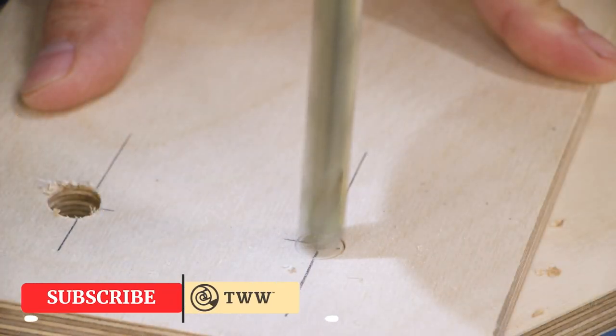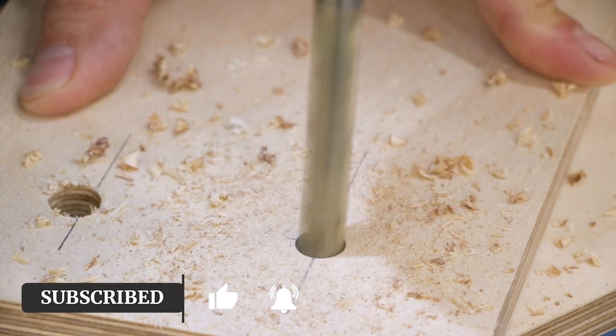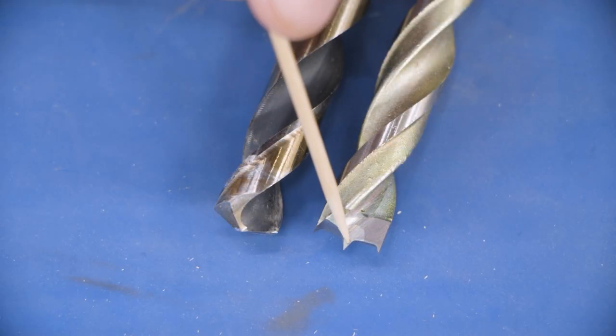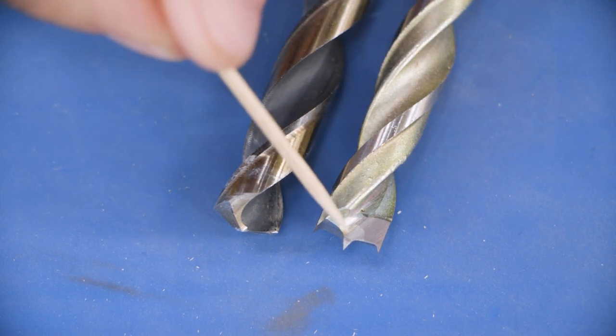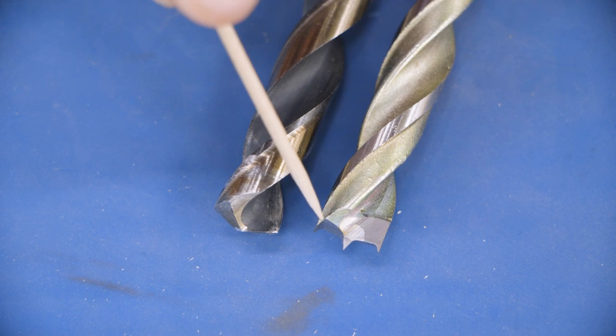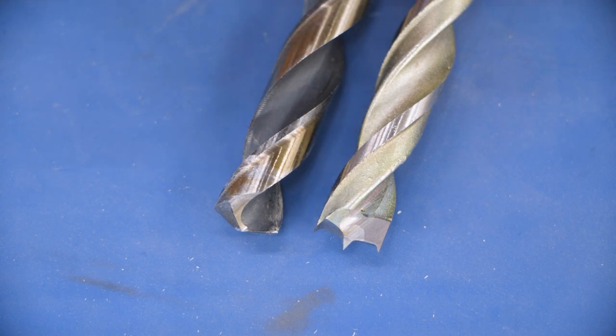That allows you to get pinpoint accuracy. So you can put a little tiny dot on something and make sure that this little spur goes into that dot, you're going to get a perfectly located hole. And this particular type of Brad Point bit actually has spurs on the outside as well, which increases the chances of a tear out free cut. So this one tends to be a lot more accurate.